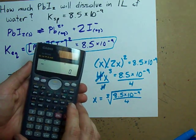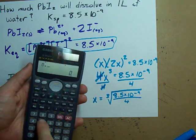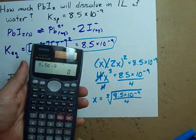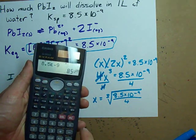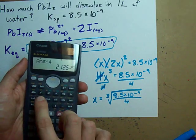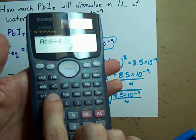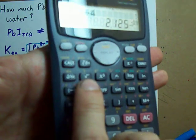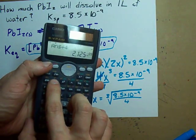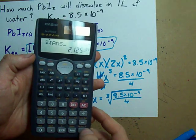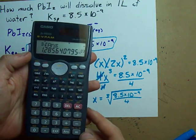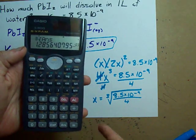8.5 times 10 to the power of negative 9, divide that by 4. And I've got a cube root button. For me, it's right above my square root. But I'm going to take the cubed root of that answer. Bam! I get 1.29 times 10 to the minus 3.